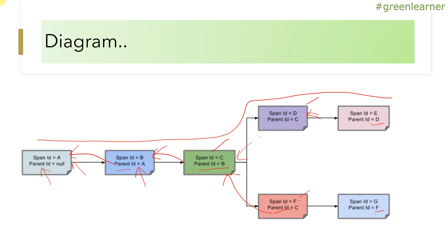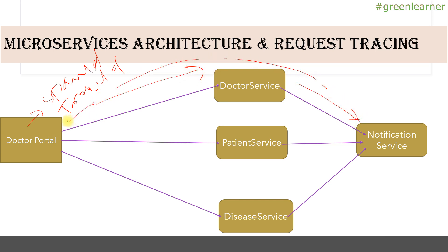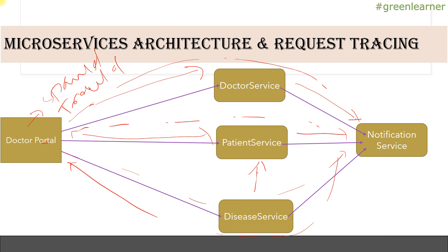This way we can form the tree-like structure with timing information and all that. In our demo application - the doctor portal application - it will generate a span ID and trace ID, then travel to the doctor service and back. We will see different permutation combinations in the demo part. This covers the theory and basic terminology of span and trace. It will be better understood when we see the practical demo part. See you in the next video with the demo.